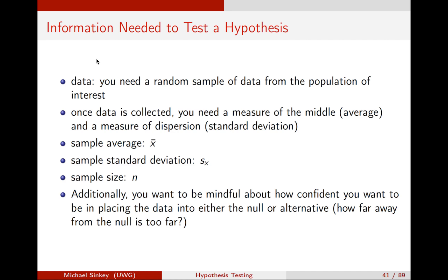I should have some process to collect the data where I don't influence the outcomes of the responses. Ideally, if I'm doing a survey or something like that, I do it in a way where responses wouldn't change based on how I delivered the survey. So I have a sample from the population that's representative, and I give the survey in a way that doesn't bias toward any particular response. Once you collect the data, you need a measure of the middle because we're hypothesizing about the value of the population mean. I need to construct a measure of the middle from my sample — that's the sample average, the sample mean, X-bar.